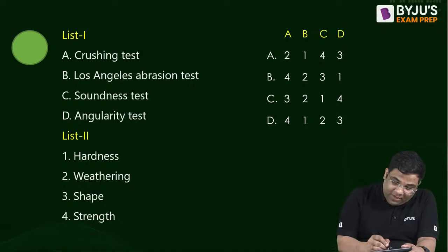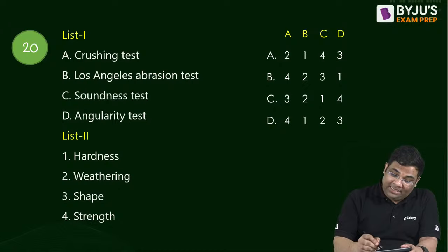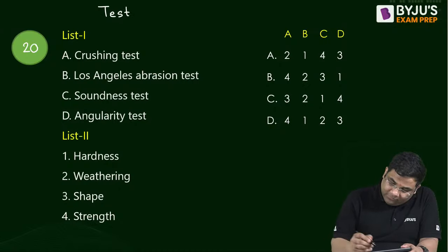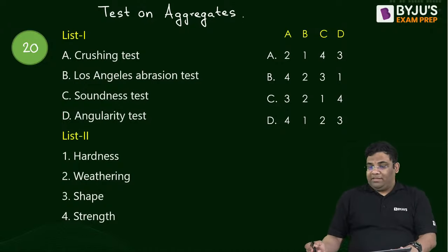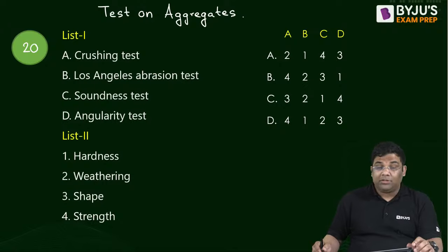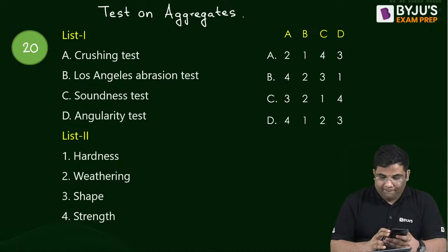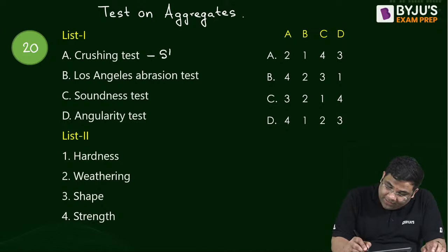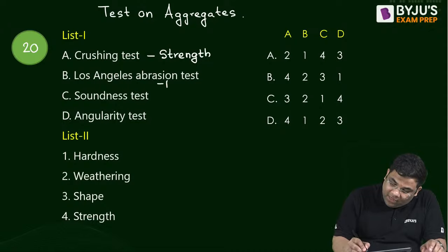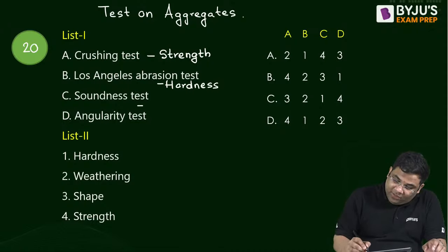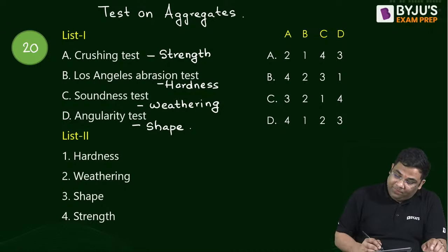Question 20: Tests on aggregates. The correct answer is D — crushing test for strength, Los Angeles abrasion test for hardness, soundness test for weathering/durability, and angularity number test for shape (voids).